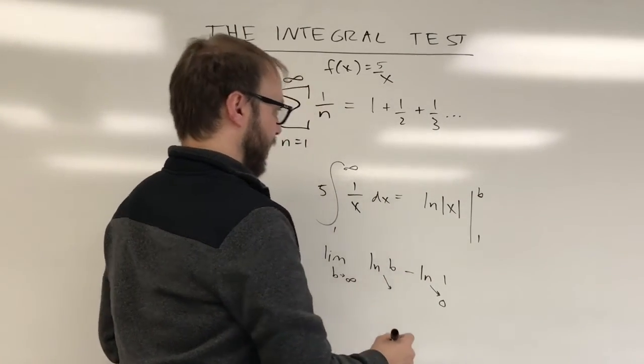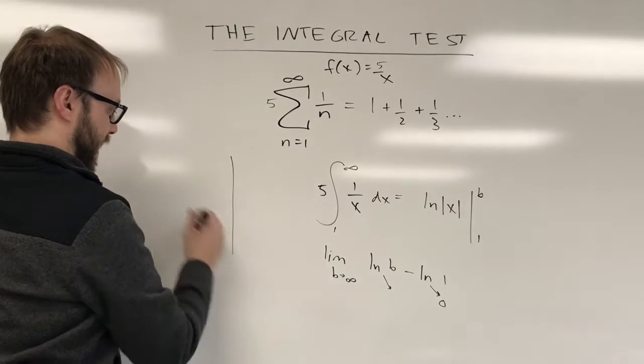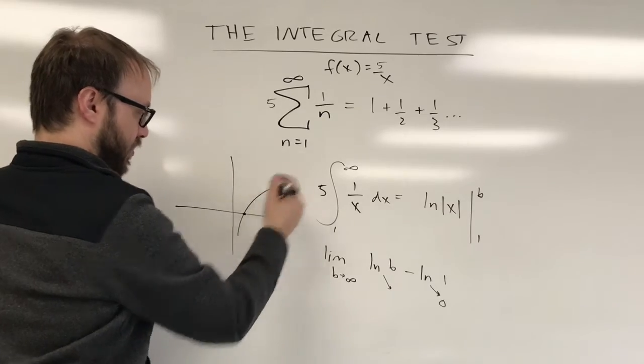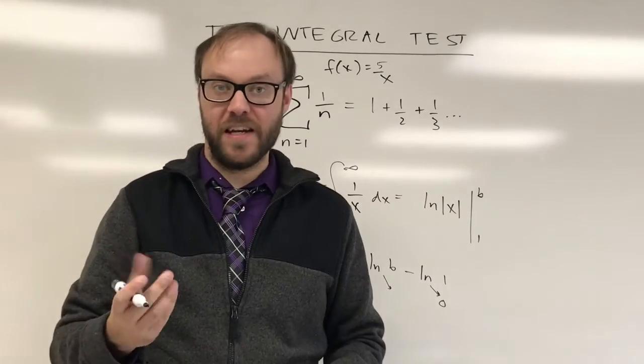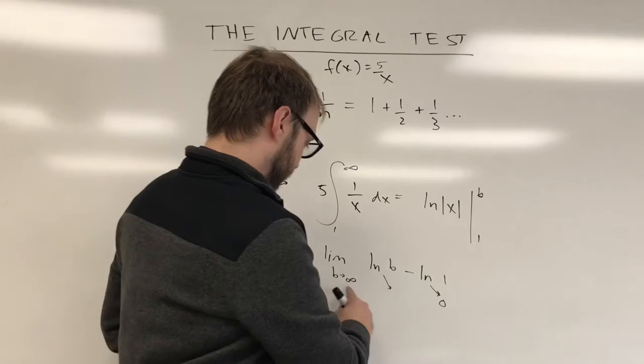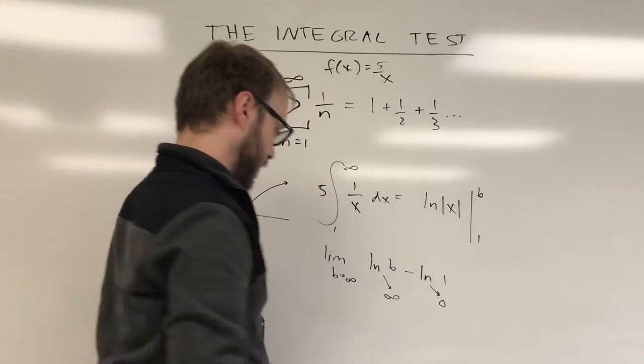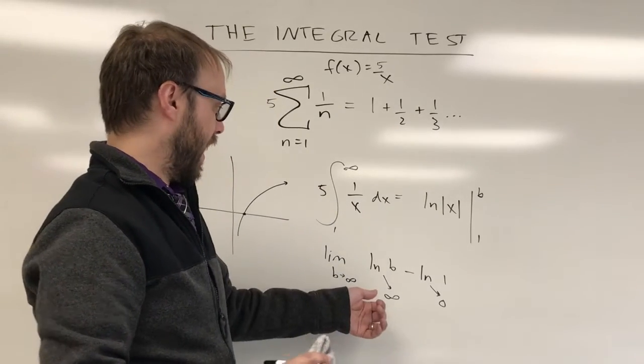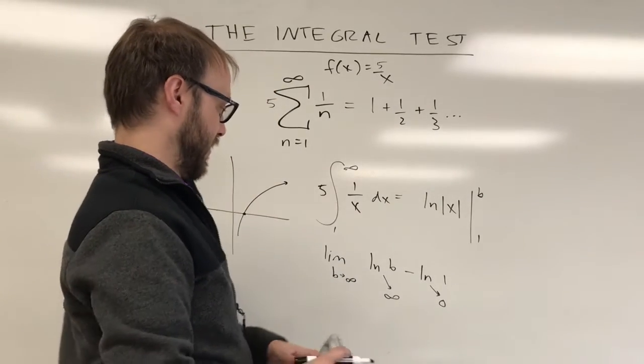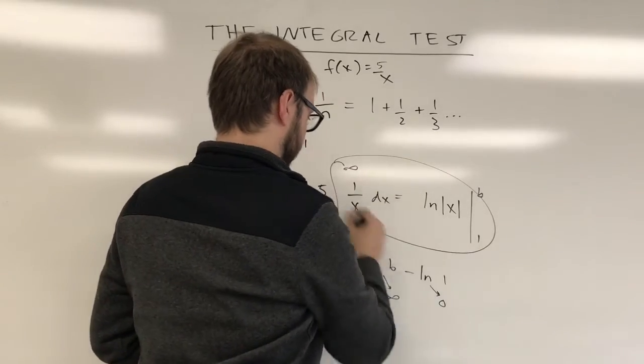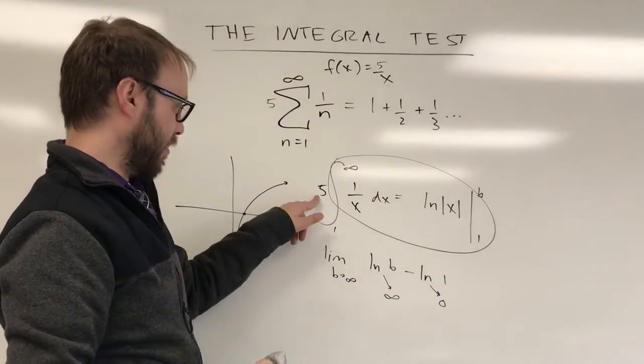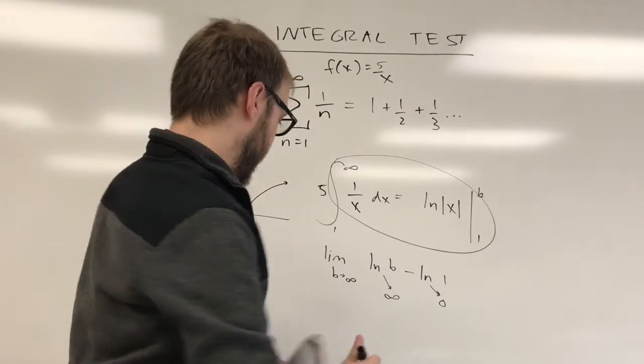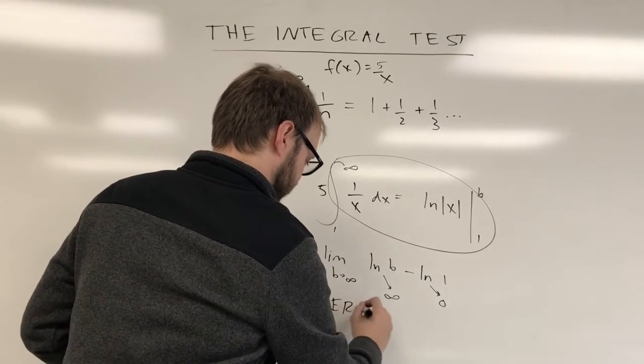That's simple to evaluate. The natural log function, remember what the natural log function looks like. Natural log function does this sort of thing. It's 0 at 1. It goes to infinity. It does it very slowly, but it does go to infinity. And so as b approaches infinity, natural log of infinity is going to approach infinity. And as a result, this diverges. The integral here diverges. Obviously, you're multiplying the integral by 5. 5 times infinity is still gonna be infinity. So this is a divergent series.